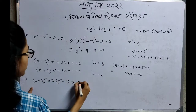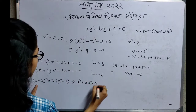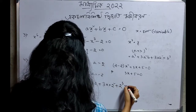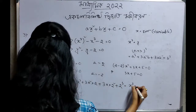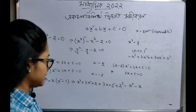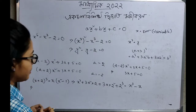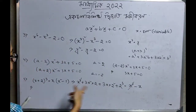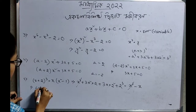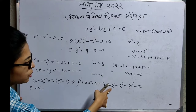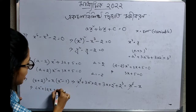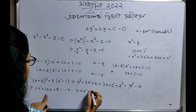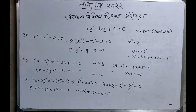So we expand: x³ plus 3x² into 2 plus 3x into 4 plus 8, which gives x³ plus 6x² plus 12x plus 8 equal to x multiplied by x² minus 1, which is x³ minus x. We then collect terms: 6x² plus 12x plus 8 plus x equals 0. So we have 6x² plus 13x plus 8, and the x³ terms cancel.